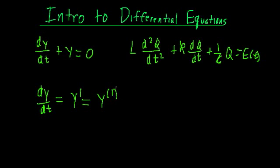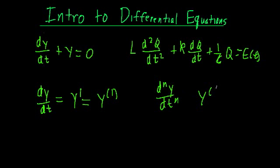We can also write the first derivative as y with a superscript (1) in parentheses. When we have a number in parentheses, that means taking the derivative that many times — as opposed to an exponent. You may see this notation quite a lot because it's very handy for higher derivatives. We can rewrite the nth derivative of y as d^n y/dt^n, or just y^(n). This means the nth derivative of y.